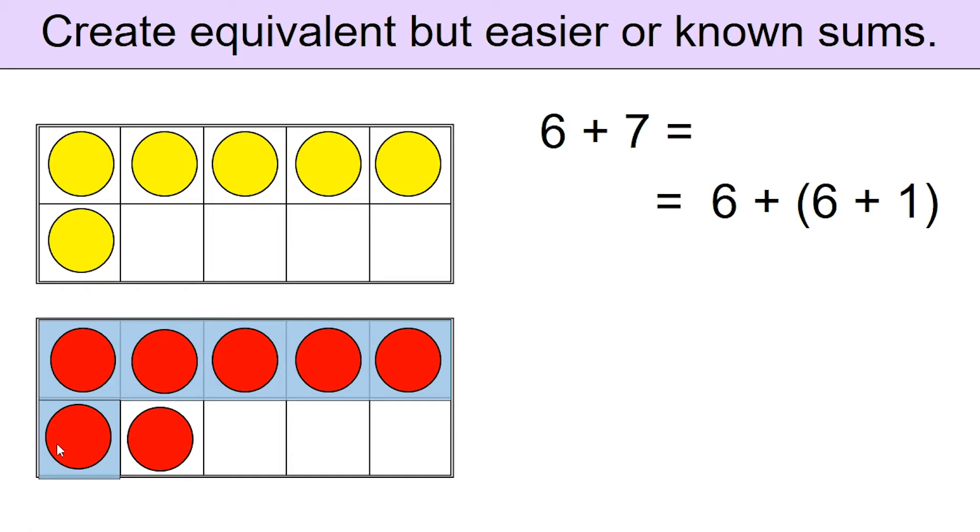Let's use the doubles fact to our advantage. We have 6 in the first frame and we have 6 in the second frame. Of course, we have 1 more. We will come back to it after.